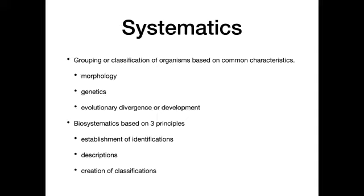In Systematics, we have some type of organized grouping and classification. These organisms are organized based on common characteristics, sometimes called homology or homologous structures. This would include their morphology — their general shape. In Cladistics, which is a form of Systematics, we look at genetics and degrees of genetic relationship, and through this we can look at evolutionary divergence and development. The idea of biosystematics is based on three basic principles: establishing identification, providing descriptions, and then creating classifications or categories.